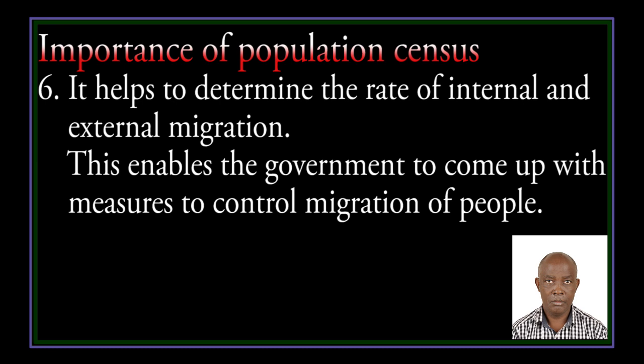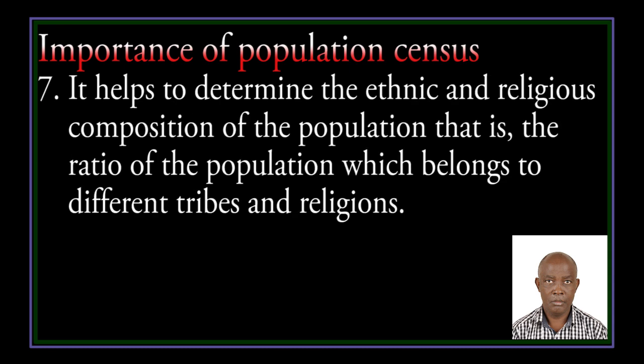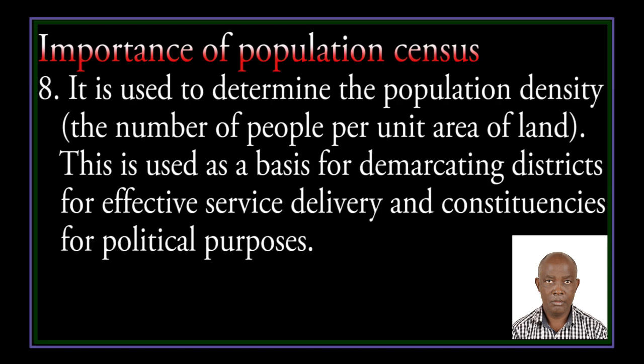Five, it helps in determining the ethnic and religious composition of the population, that is the ratio of the population which belongs to different tribes and religions. Six, it helps to determine the population density — the number of people per unit land area. This is used as a basis for demarcating districts for effective service delivery and constituencies for political purposes.